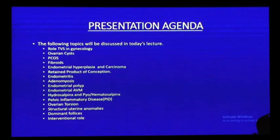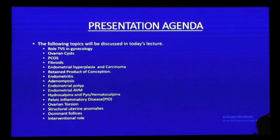The agenda for this talk covers a number of pelvic pathologies assessed by transvaginal ultrasound, starting from its role. In the pelvis we have organs like the uterus, ovaries, adnexa, and sidewalls. Pathologies include variances, polycystic ovarian disease, fibroids, endometrial hyperplasia, RPOCs, endometritis, adenomyosis, polyps, AVMs, hydrosalpinx, pyosalpinx, PIDs, torsions, and structural anomalies, as well as an important interventional role. It's beyond the scope of this lecture to cover everything comprehensively, but this will serve as a refresher.